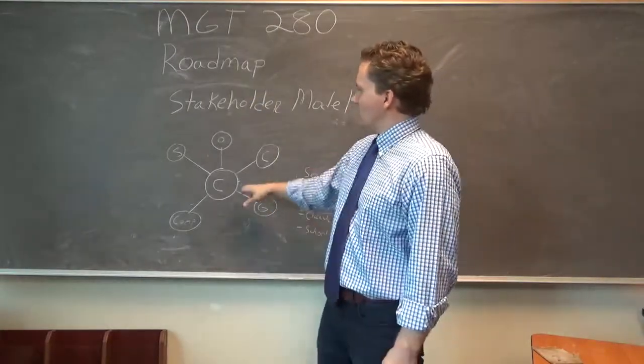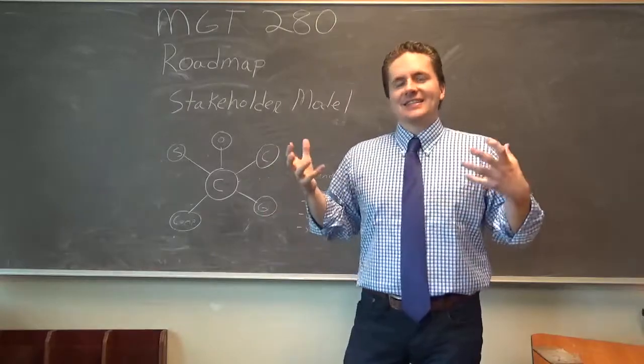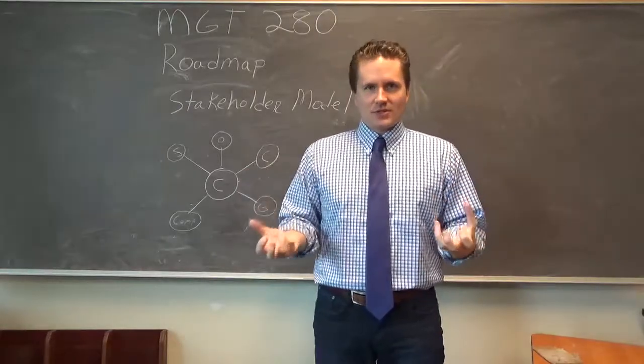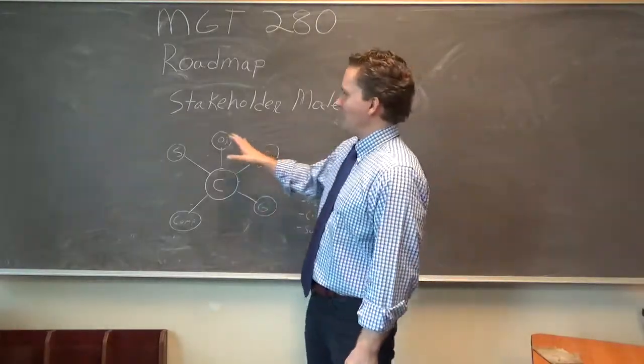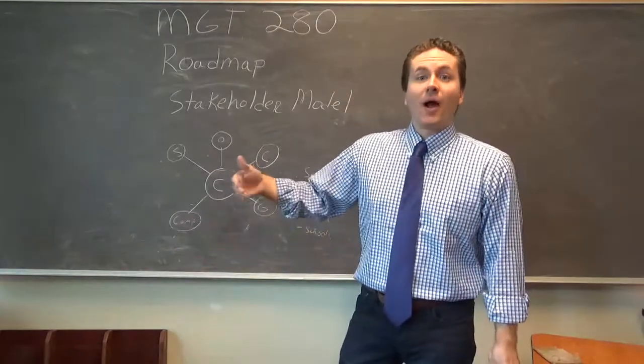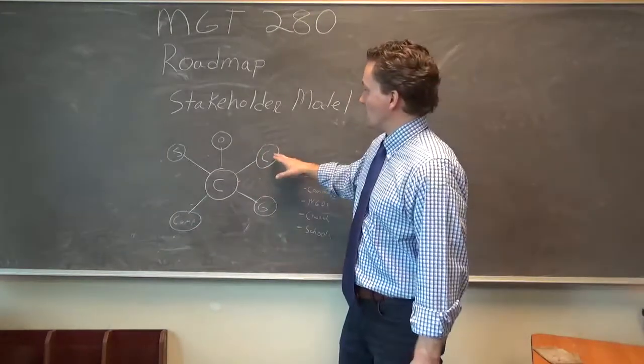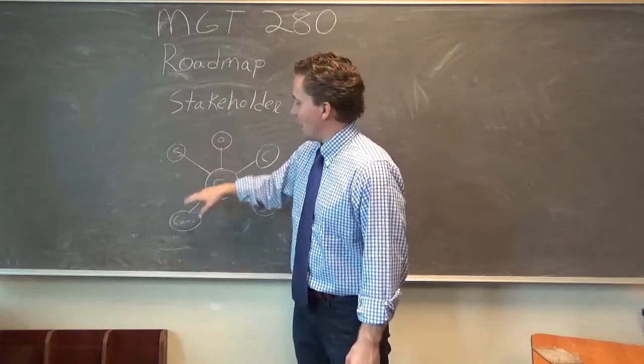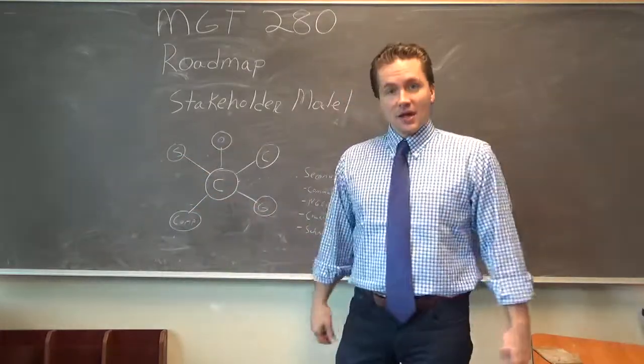So what this does is it looks at the corporation as at the center of competing interests. And these competing interests are normally considered like primary stakeholders. This would include customers, owners, suppliers, competitors, and governments.